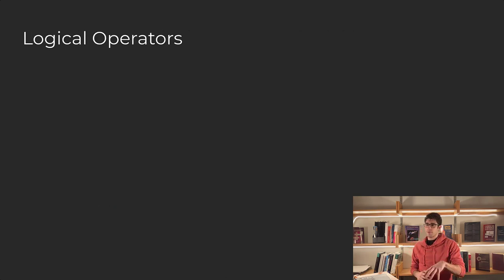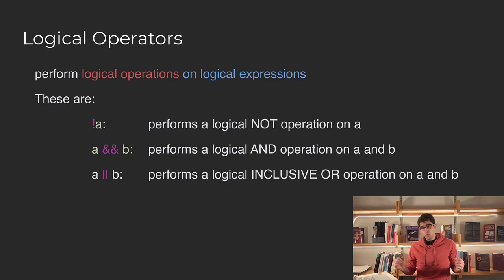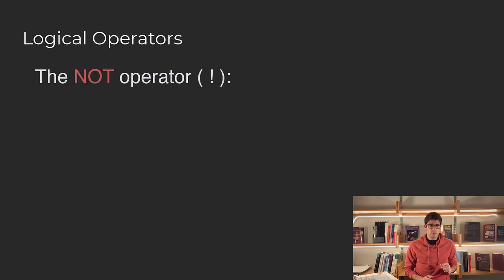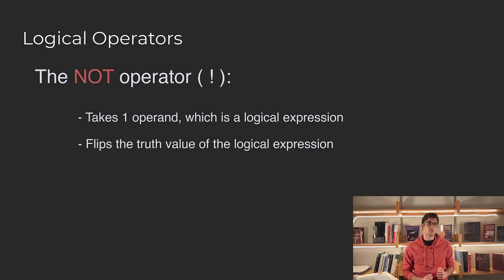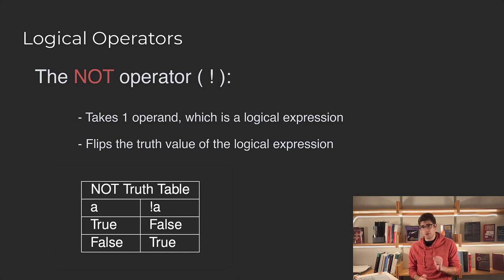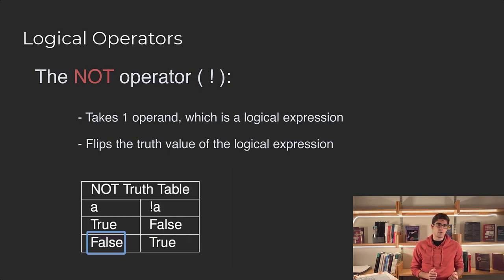Now let's talk about some other logical operators. These are the NOT, AND, and OR operators. The NOT operator takes one operand, which is a logical expression, and what it will do is switch its truth value. So if we had some logical expression a — if a were true, NOT a would be false. And if a was false, NOT a would be true.